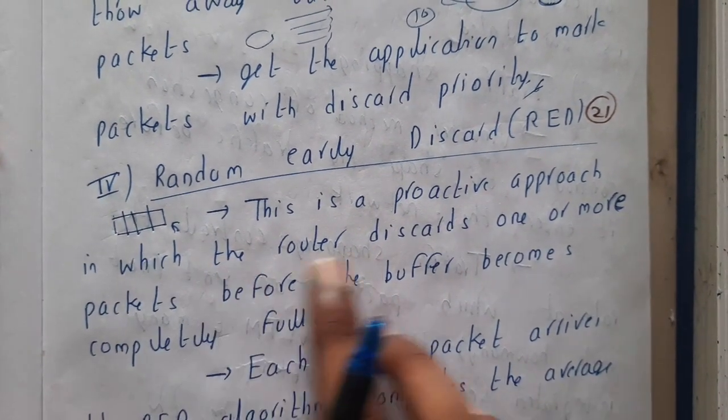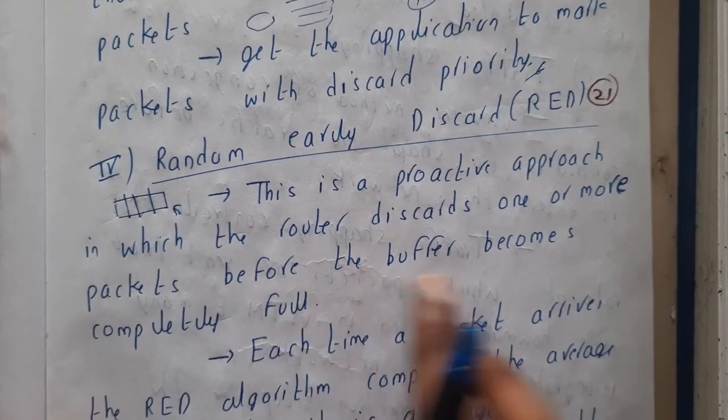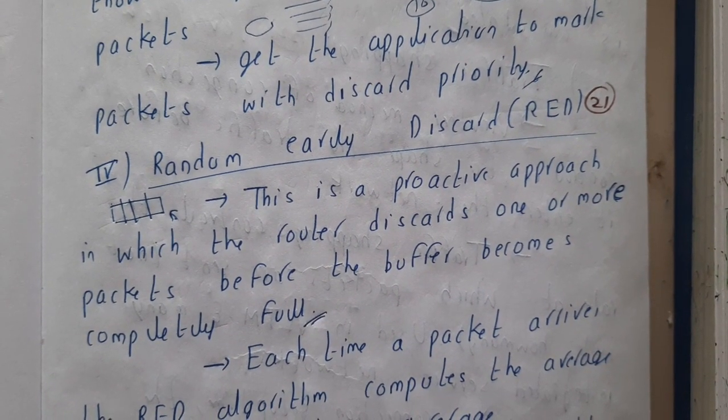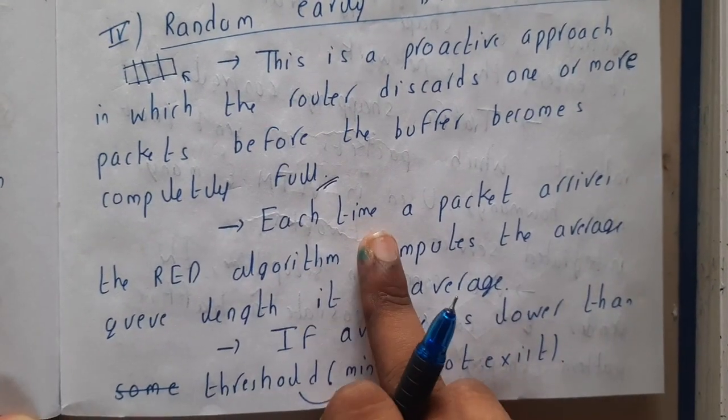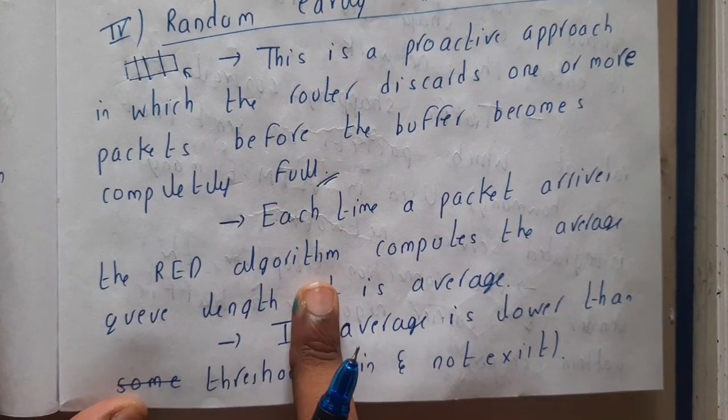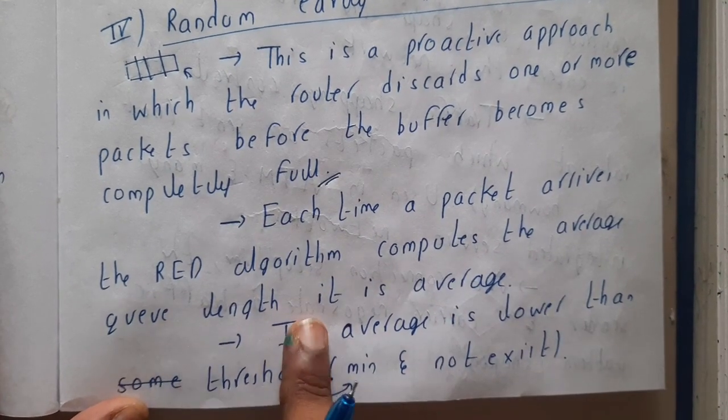This is a proactive approach in which the router discards one or more packets before the buffer becomes full. Each time a packet arrives, the RED algorithm - Random Early Discard algorithm - computes the average queue length and stores it in average.